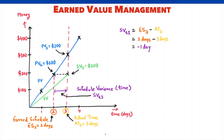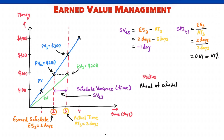We can also define a time-based schedule performance index. SPI(t) at the end of the third day equals the ratio of earned schedule to actual time — SPI(t) equals 0.67, or 67 percent. When earned schedule is more than actual time, the project is ahead of schedule: schedule variance is positive and SPI is greater than 1. When earned schedule equals actual time, the project is on schedule: schedule variance is 0 and SPI equals 1.